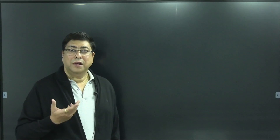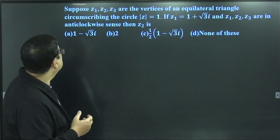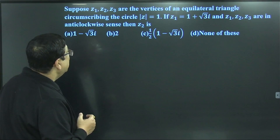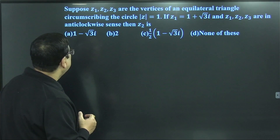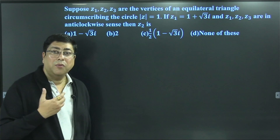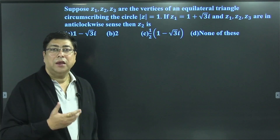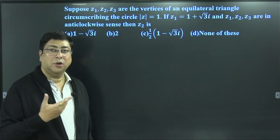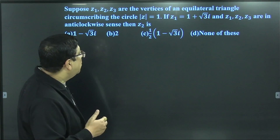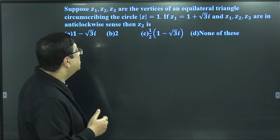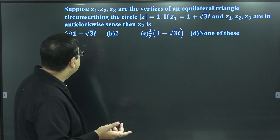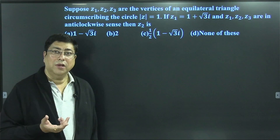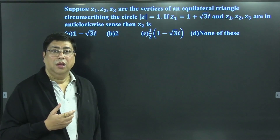Suppose there is a sum where Z1, Z2, Z3 are the vertices of an equilateral triangle circumscribing the circle |Z| = 1. Now, |Z| = 1 means the circle x² + y² = 1, whose center is the origin and radius is 1. Given Z1 = 1 + i√3, and Z1, Z2, Z3 are in anti-clockwise sense, we need to find Z2. Four options are given.